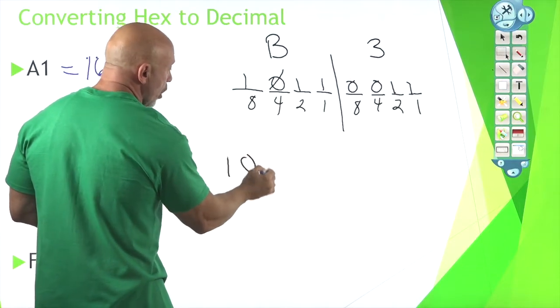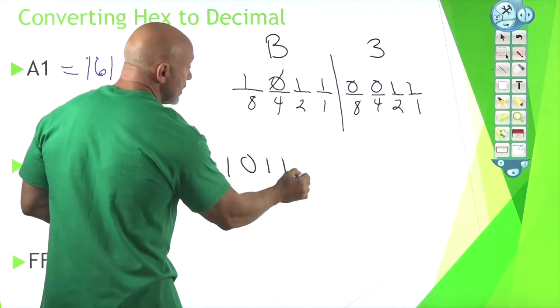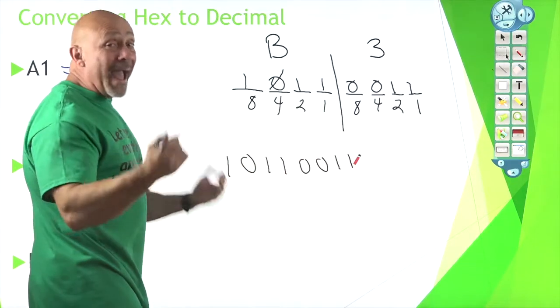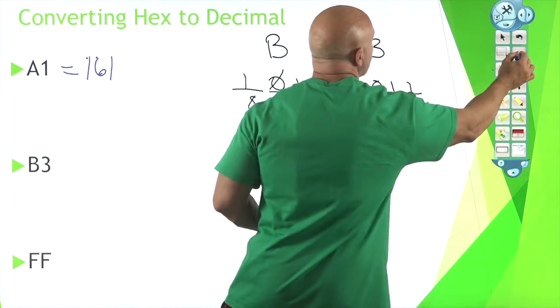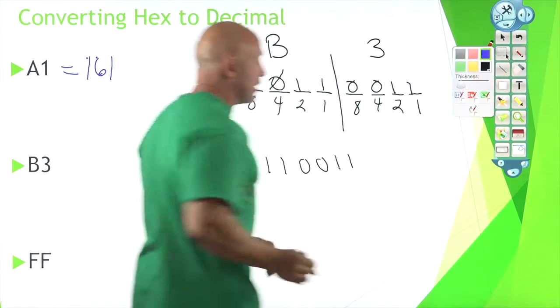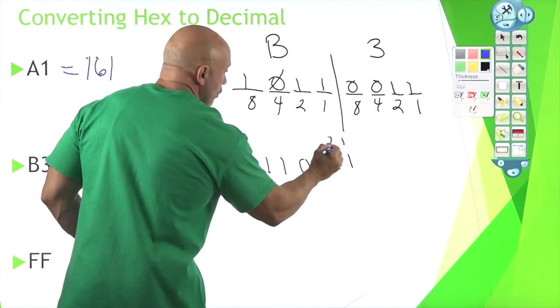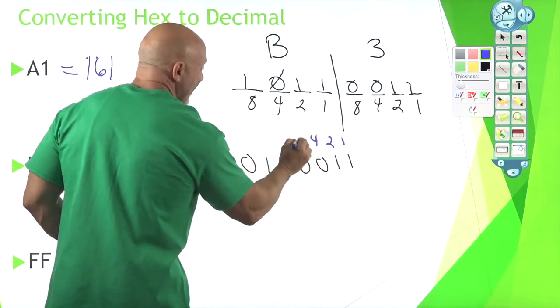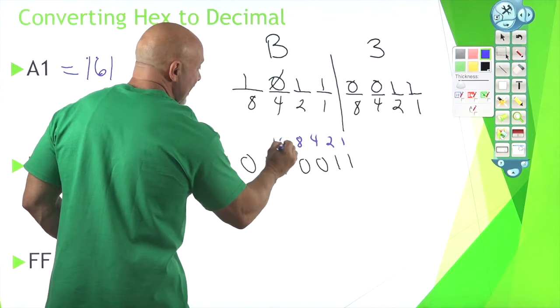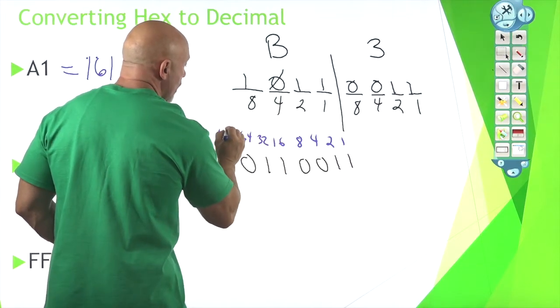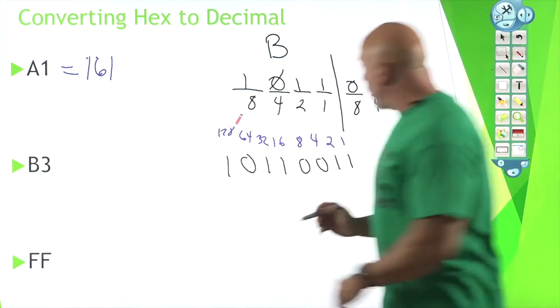There's your binary once again: one, zero, one, one, zero, zero, one, one. Then you add, and we'll change that to blue just to have a different color to make it easier to see. I'll try to make the numbers better. Okay, one, two, four, eight, sixteen, thirty-two, sixty-four, 128.